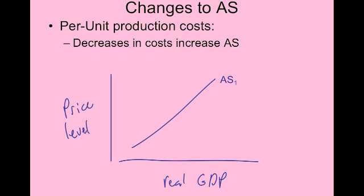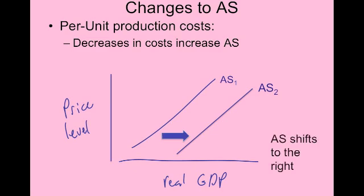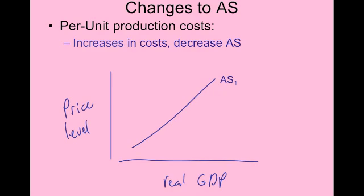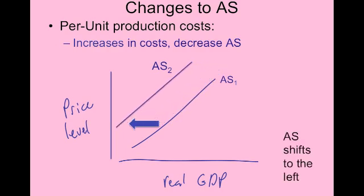If per unit production costs decreased — like if workers accepted a pay cut — then businesses could supply more product at every possible price level. Or you can think of it as: since costs decreased, they could charge a lower price for the same quantity. Either way, aggregate supply increases, which is a shift to the right. If per unit production costs increase, the opposite happens — businesses can't supply as much at the same price, or must charge more for the same quantity — so it's a shift to the left.